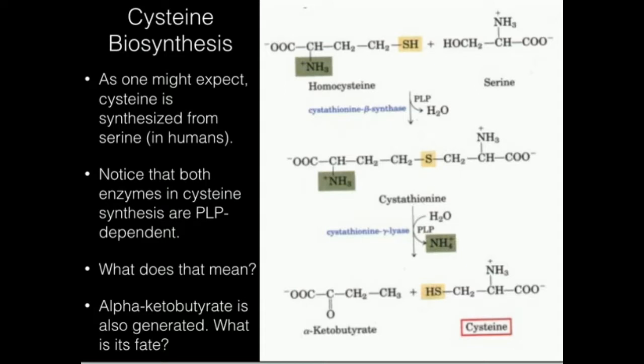As a result of that, if we were B6 deficient, we're not going to be able to do this transformation very well, and cysteine production is going to go sharply down. So that's another reason why you want to make sure you get adequate amounts of your B vitamins, particularly pyridoxine, because PLP is required for both of these enzymes. If you don't have it, you're not going to be making cysteine.